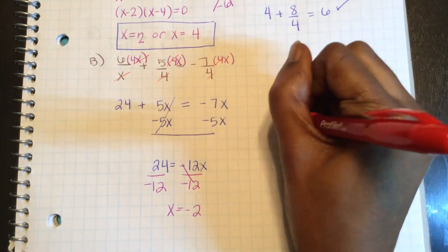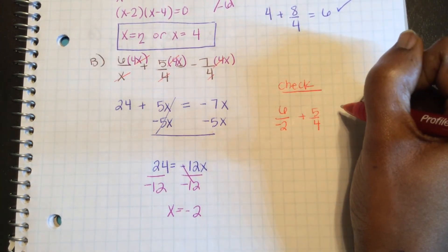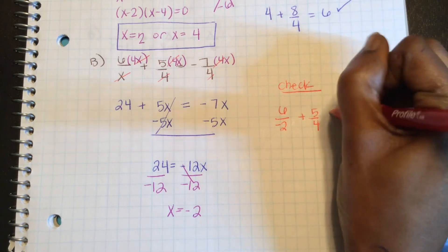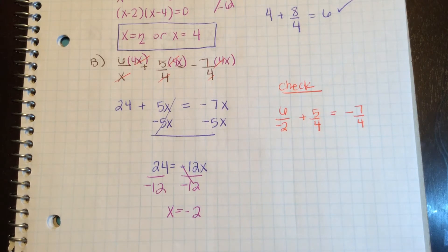Does 6 over negative 2 plus 5 over 4 equal negative 7 over 4? Well, let's see.